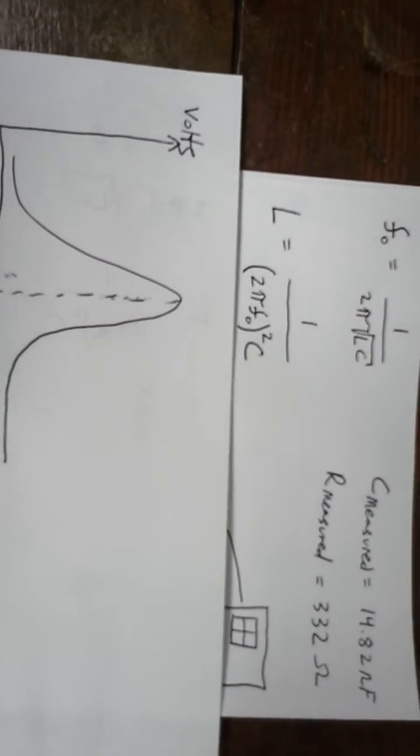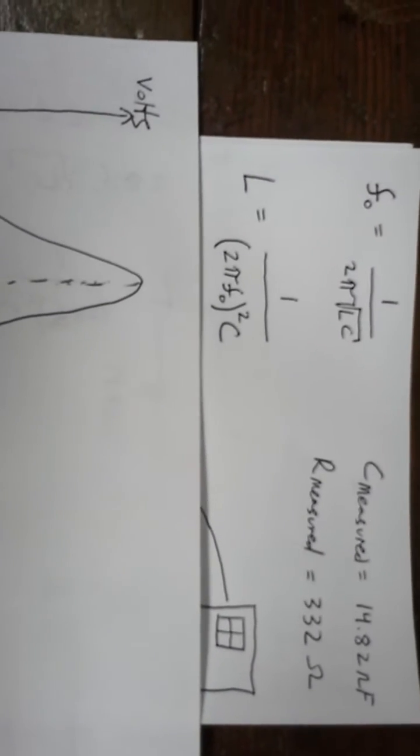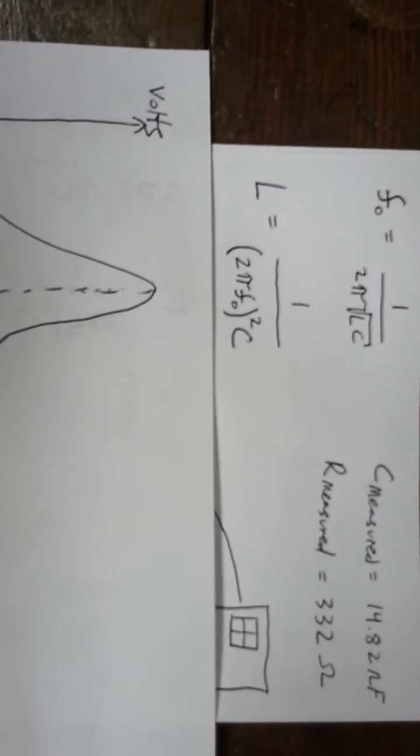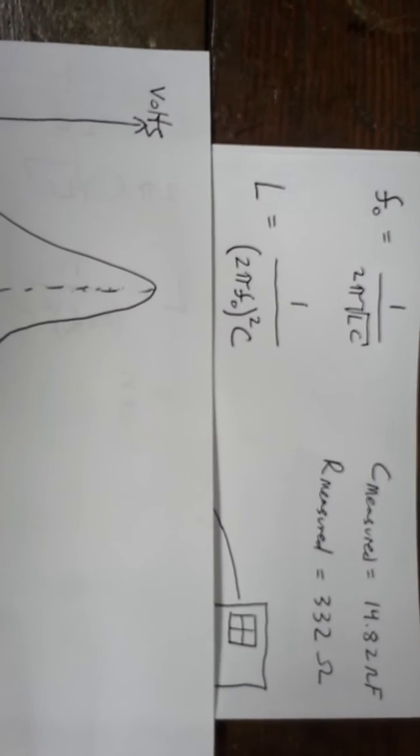When you manipulate the algebra, the inductance is equal to 1 over 2 pi F0 squared times the capacitance.